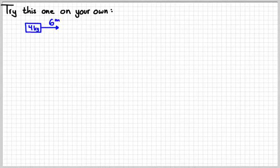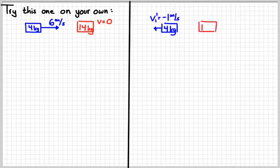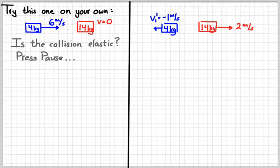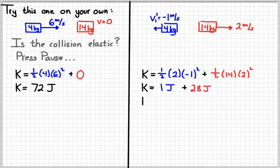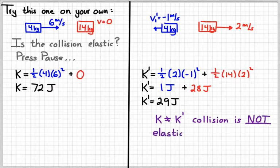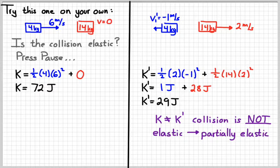Now that we know the velocity of the second object, see if you can determine if it's an elastic collision. Pause, give it a try, then press play and check yourself. Calculating the kinetic energy before the collision gives 72 joules. Calculating the kinetic energy after the collision gives 29 joules. The energy is not the same before and after, which means it's not an elastic collision — some energy was lost. We'll find out later that energy gets lost to heat. So we categorize this as a partially elastic collision.